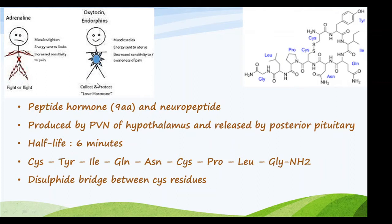We know about the fight or flight hormones — adrenaline and noradrenaline. Oxytocin and endorphins are called the love hormones. They are important for muscle relaxing, and energy is sent to the uterus with decreased sensitivity and awareness of pain.